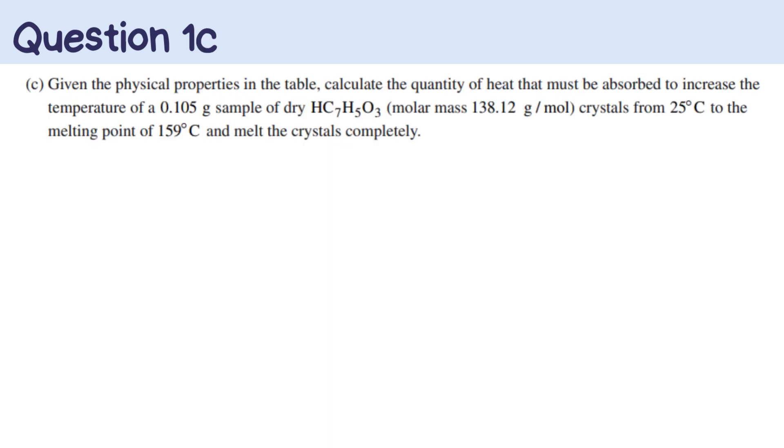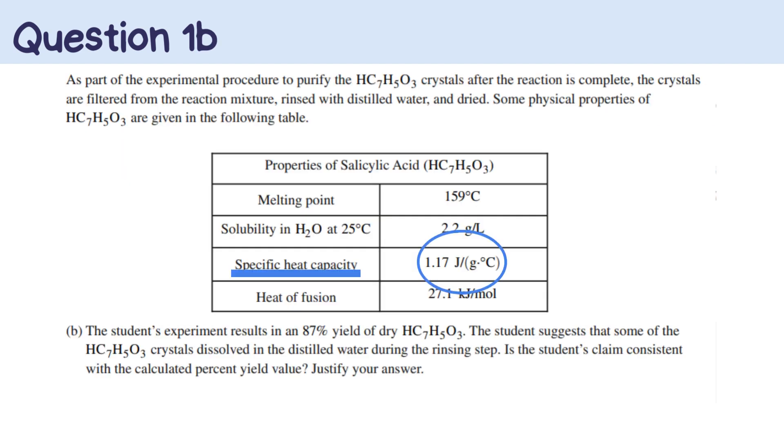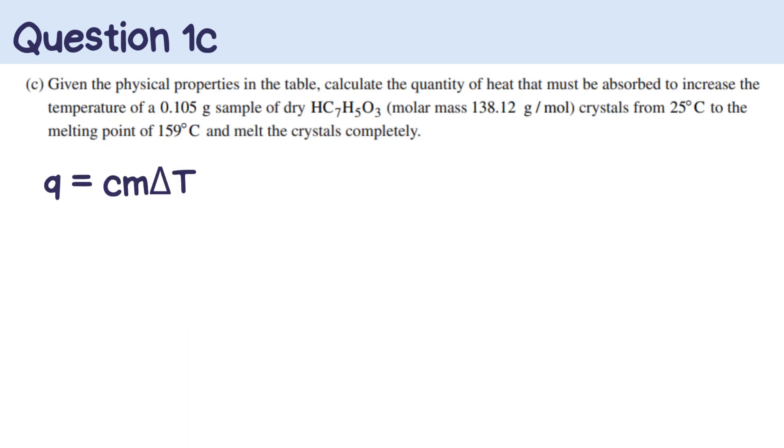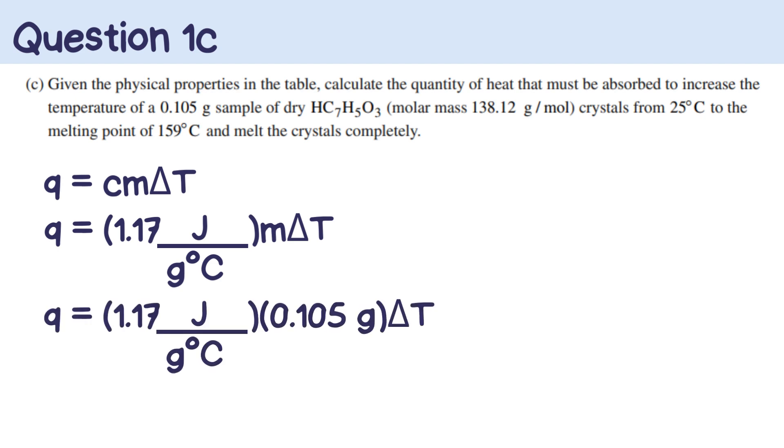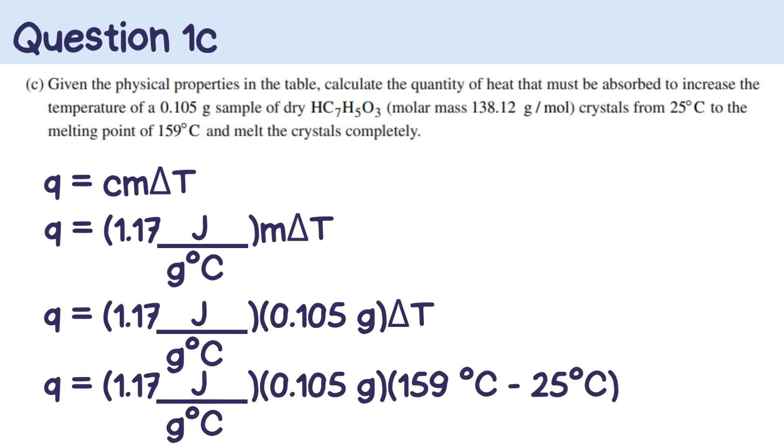Okay, and then for the next question, we're given all this information and we're asked to find the quantity of heat to bring it to 159 degrees Celsius and to melt the crystal completely. We're given mass, initial and final temperature, and from the table we're also given specific heat. If you haven't guessed already, this is starting to look like a CM delta T problem. Nice, we love those. I mean, from here it's pretty self-explanatory. We're substituting the 1.17 joules per grams times degrees C into the C for the specific heat capacity. The mass, or M, is going to be the 0.105 grams. And the change in temperature is T final minus T initial, so 159 degrees Celsius minus the 25 degrees Celsius. And you get an answer of 16.5 joules.